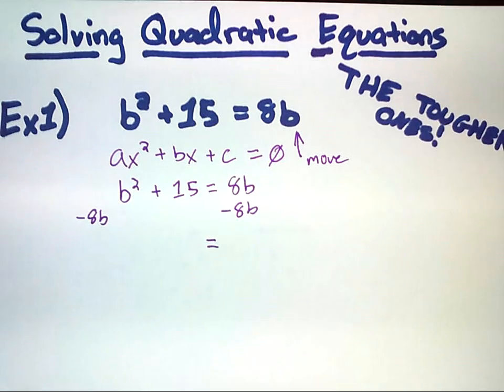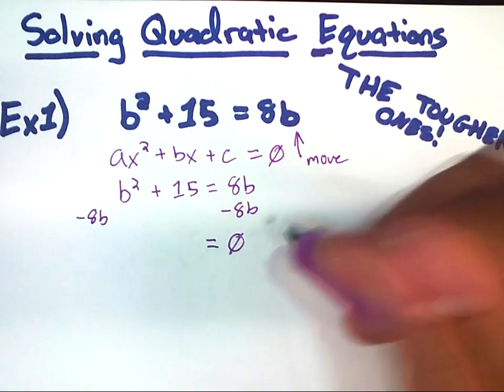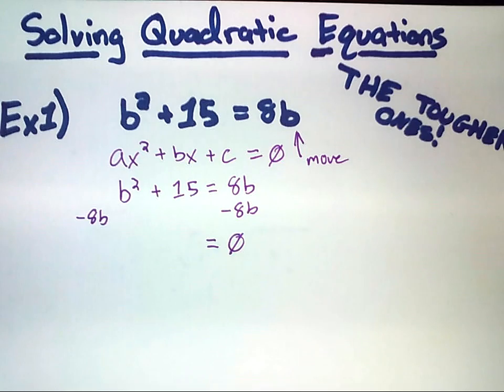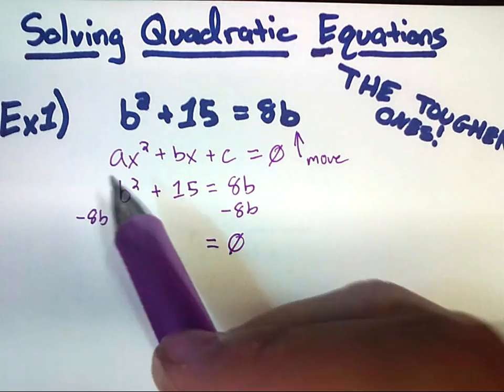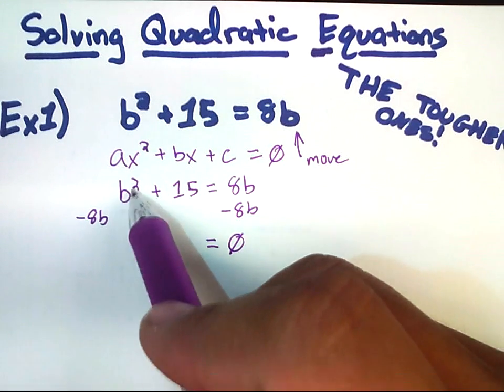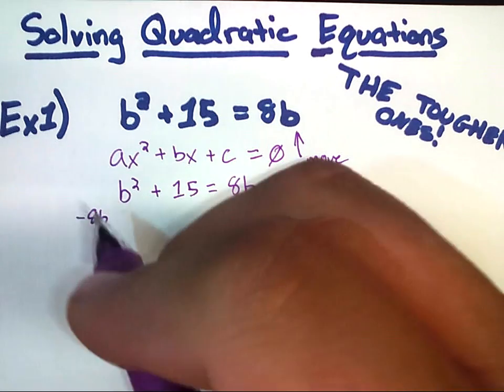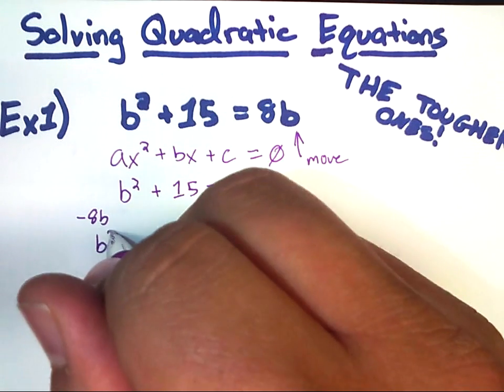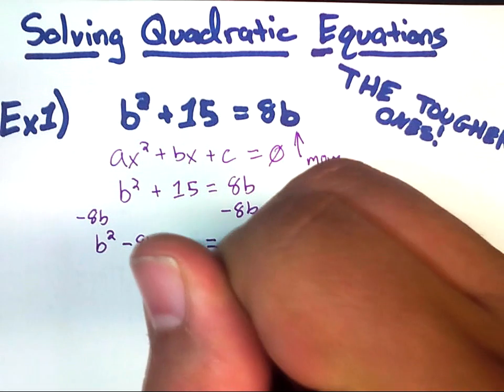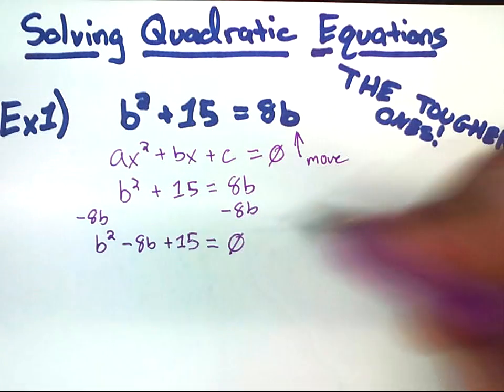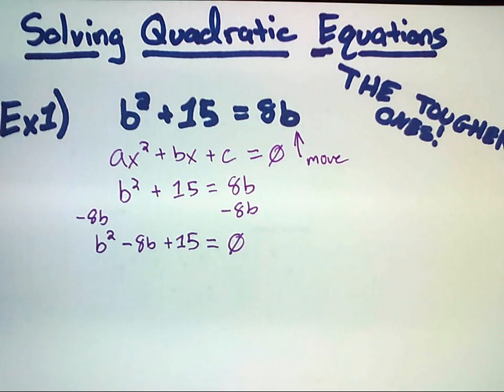And when we clean this up, 8b minus 8b, well, that cancels out, and that's going to leave us with zero. On the left side, this didn't clean up with anything else. I like to personally write everything in order based on exponents. So, I'll usually start with b squared, and now I'll put the minus 8b in here, plus 15. And as you can now see, it looks a little bit closer to something else we've worked with.